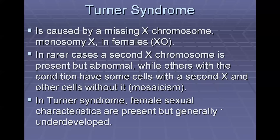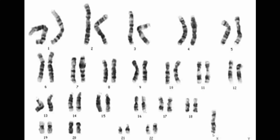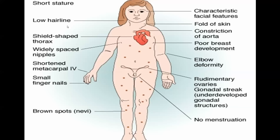Turner syndrome is caused by a missing X chromosome, also known as monosomy X — mono meaning one. This affects females because there is no Y chromosome. Sometimes it can involve a partial second X chromosome, which is called mosaicism. In Turner syndrome, female sexual characteristics are present but generally undeveloped, so the female secondary sex characteristics are not very prominent. The karyotype shows all chromosome pairs except for the unpaired X, and physical traits generally include short stature and a lower hairline, among others.